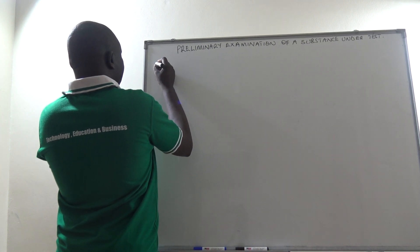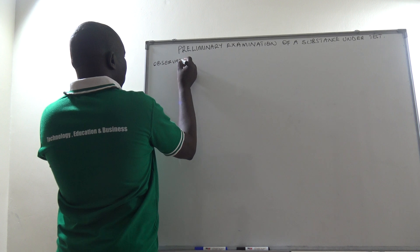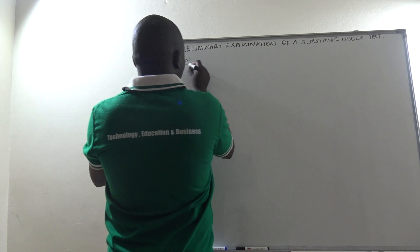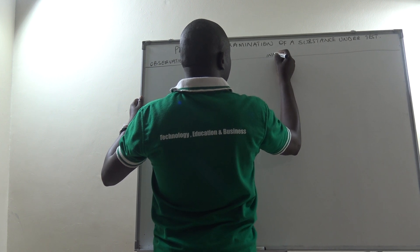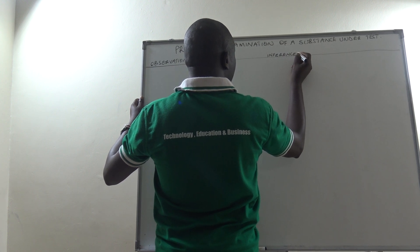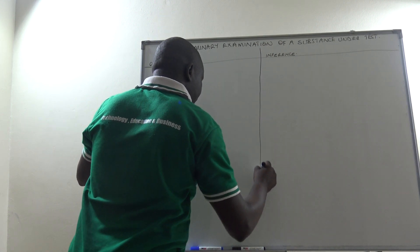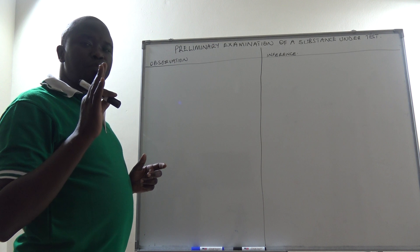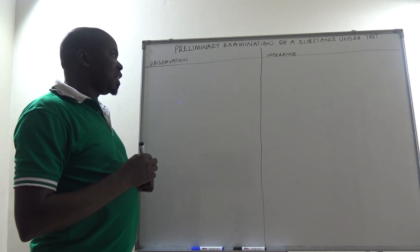Let us look at our observations and what they mean — in this case, I am calling it inference. That means what it probably means. We are saying that we are not taking the preliminary examination of a substance to be definite proof of the presence of a particular cation or anion in that substance under test.